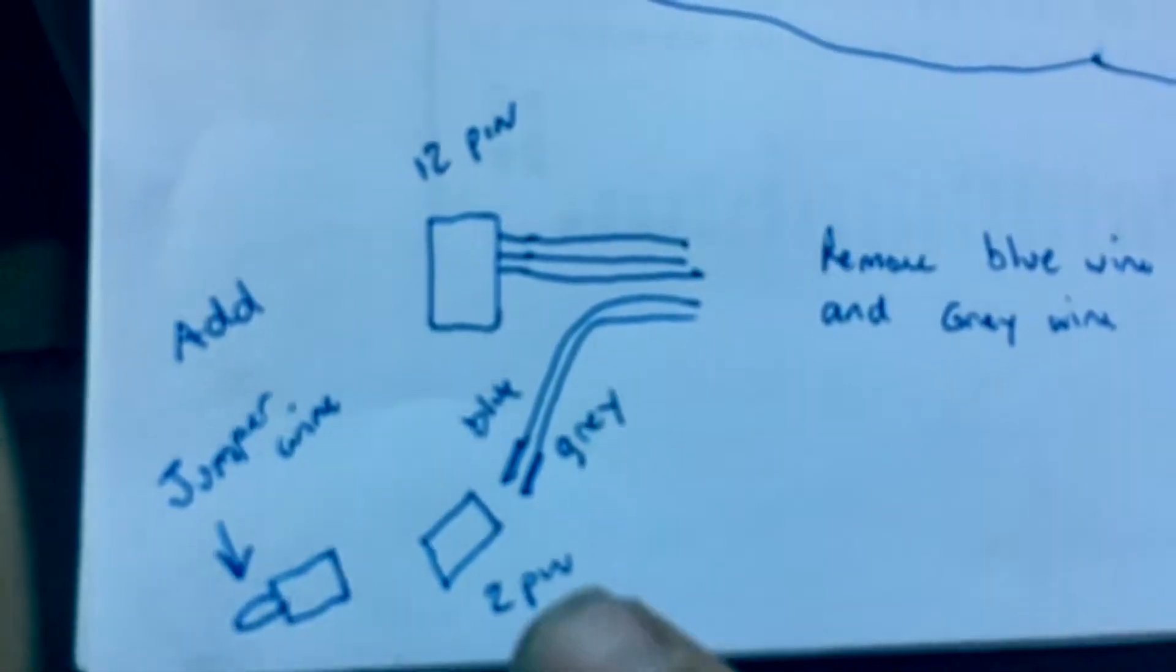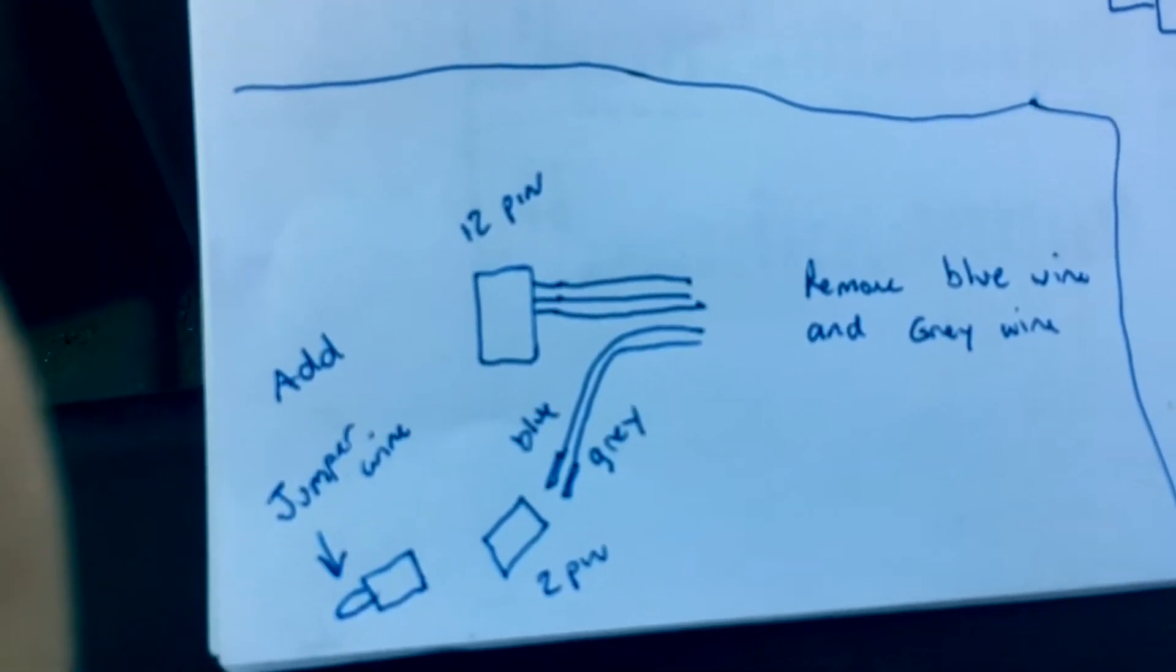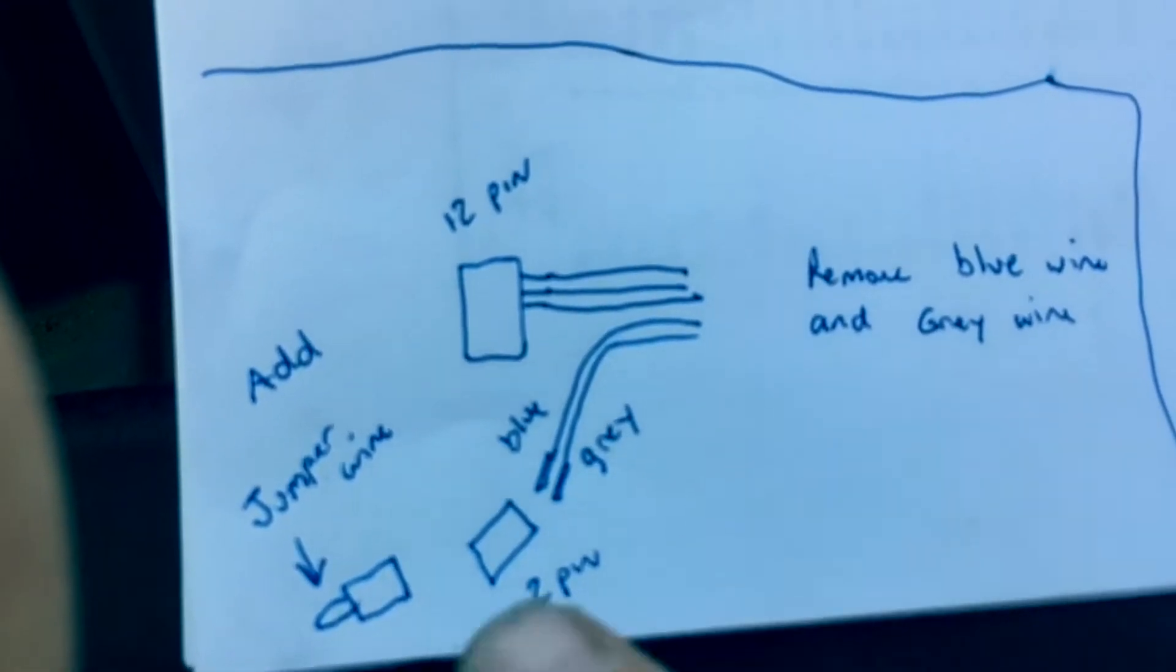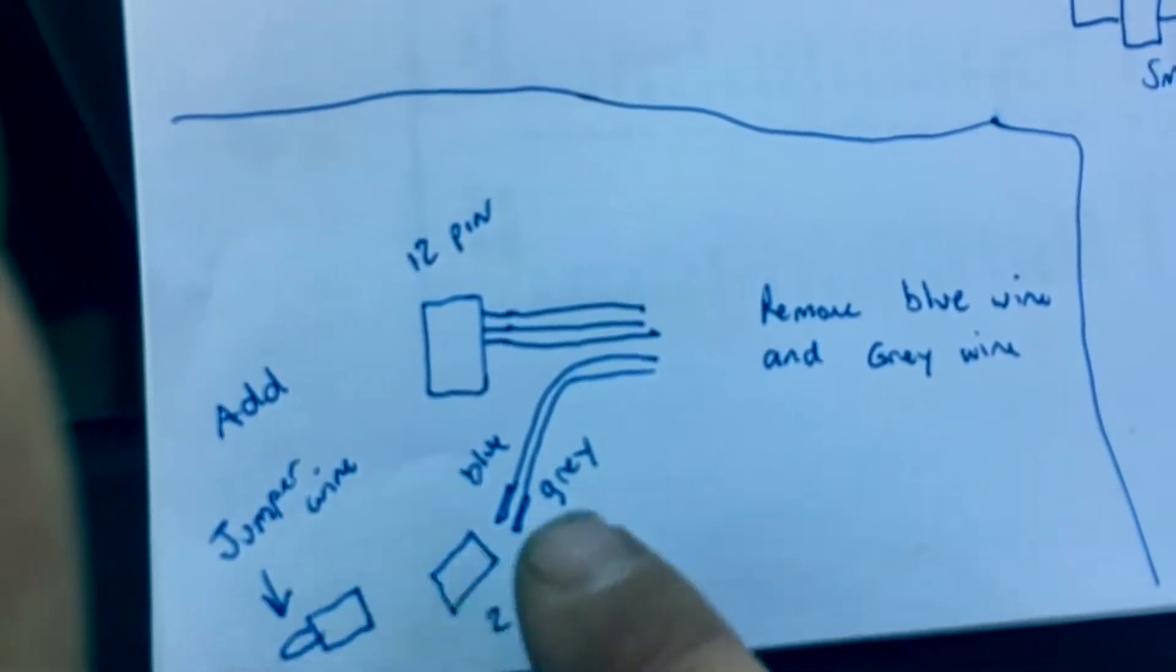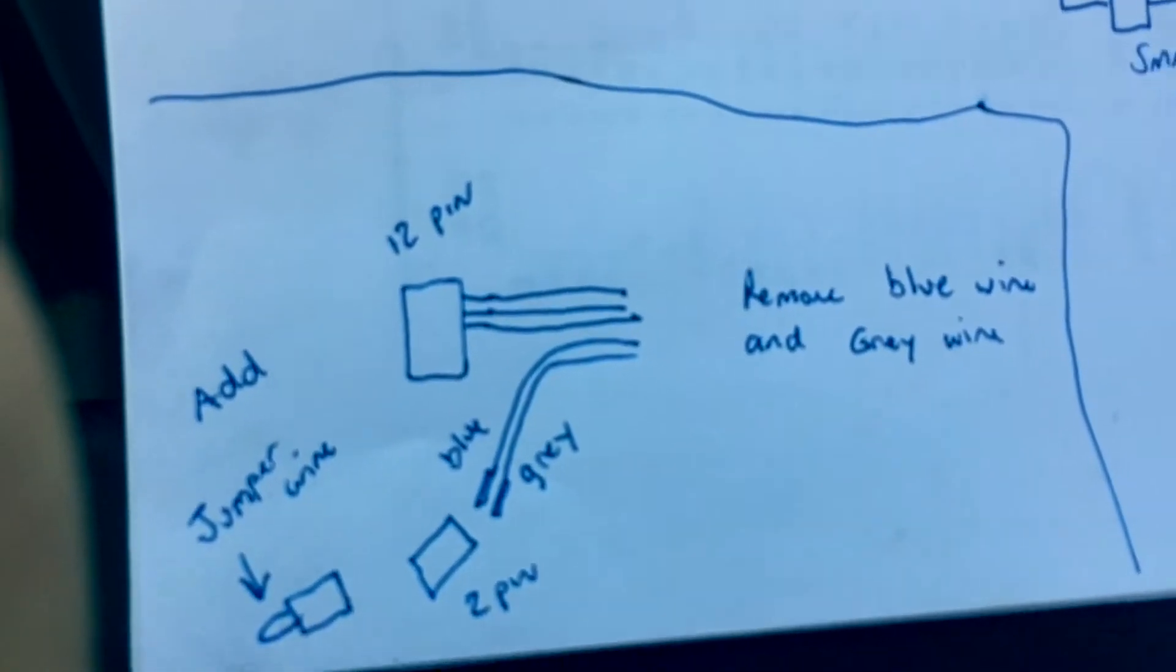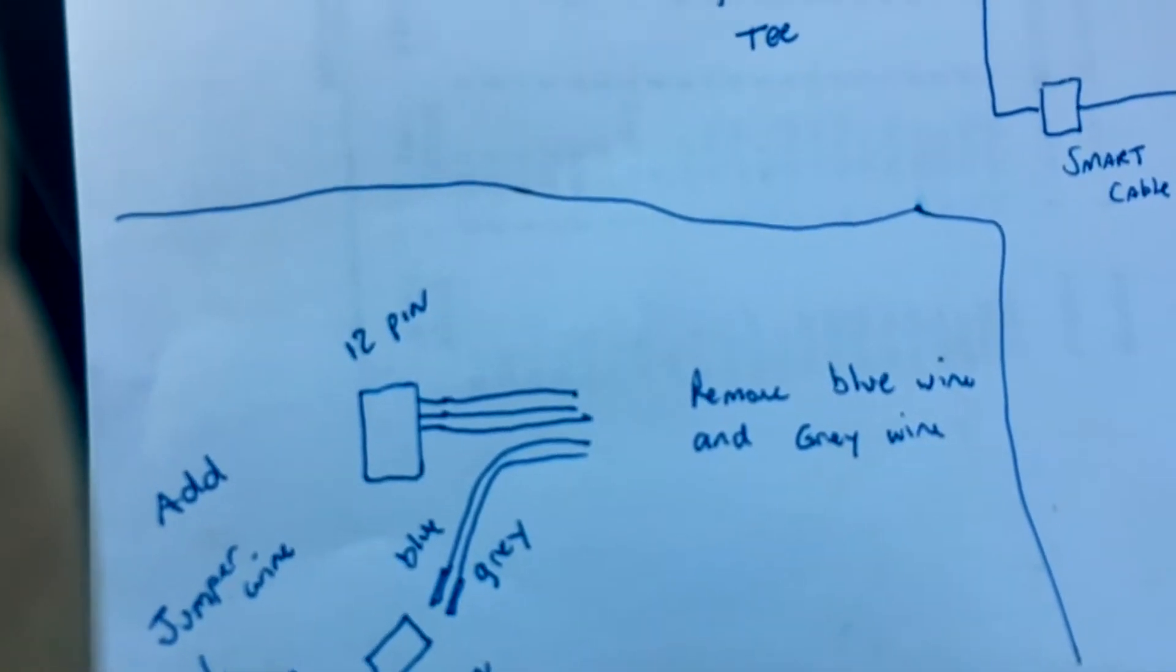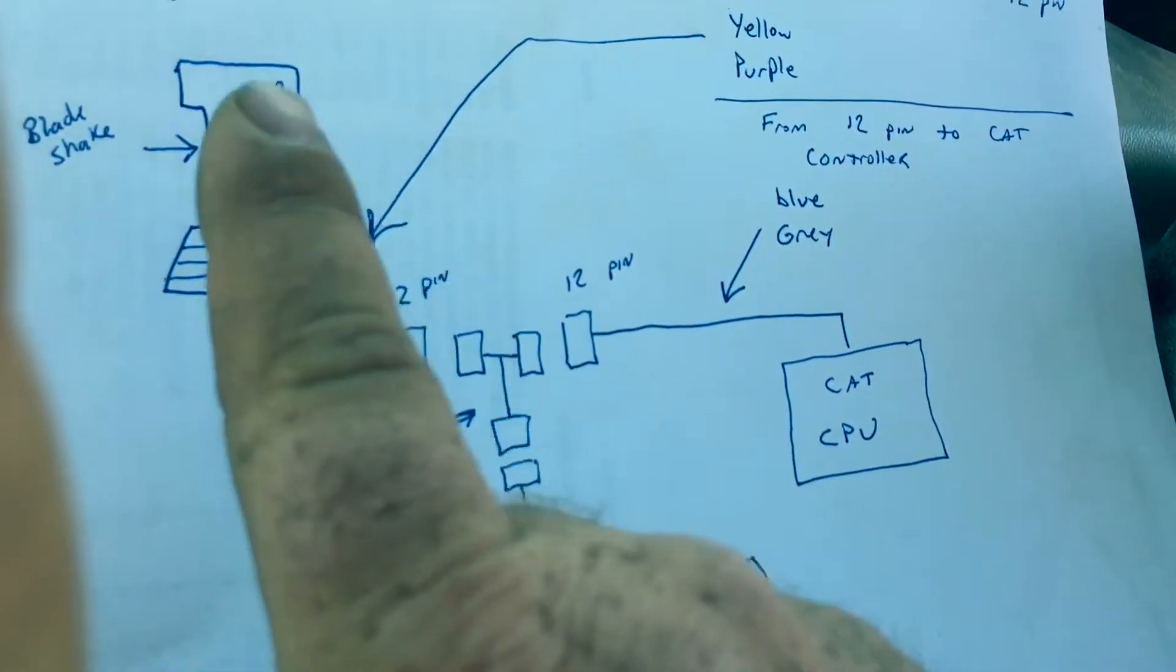So what we had done is on the back side of this connector that runs to the Caterpillar side, we have removed the blue and the gray wire out of the 12 pin, used a two-pin Deutz connector, stuck them in the Deutz connector, and on the back side of the plug, we've just installed a little jumper and then connected that two-pin Deutz connector together, which makes that blue-gray wire that's normally closed is staying closed and it's bypassing everything up above the circuit here.